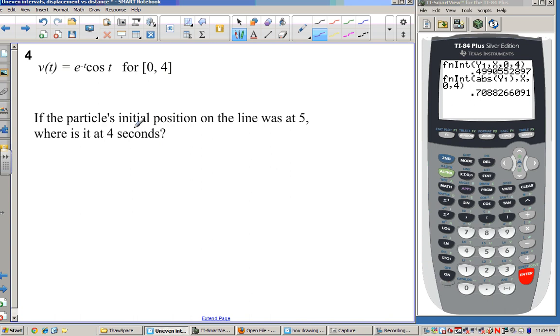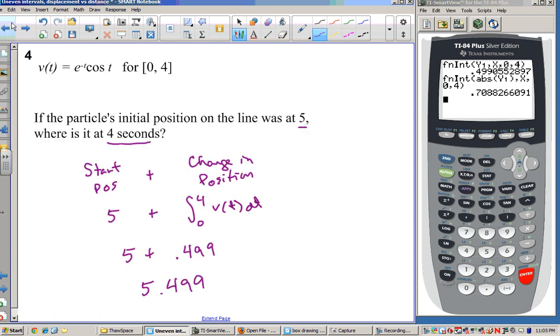Our last question in this talks about if the particle's initial position was at 5, where is it at 4 seconds? All right, so this is one of these ones where we want to consider our starting position, and to that we add our change in position. Our starting position is 5, and whenever we want to change in position, we simply take the integral of our rate. And we figured out this value. There it was, 0.499. So I started in position 5. My change in position was 0.499, which means at the end of 4 seconds, my new position is 5.499. All right, that's it.